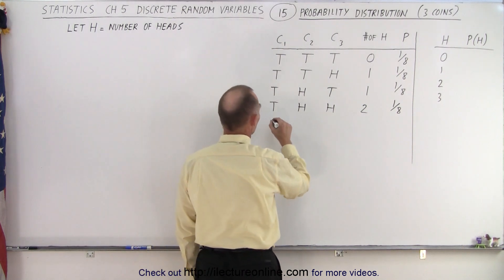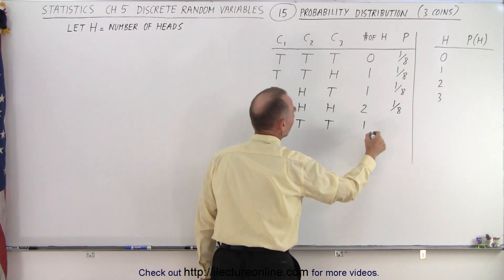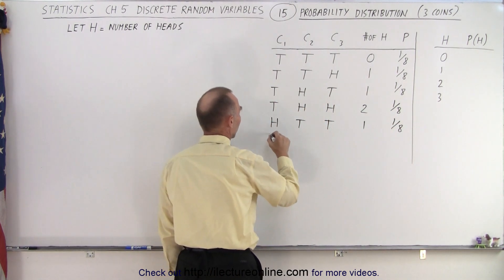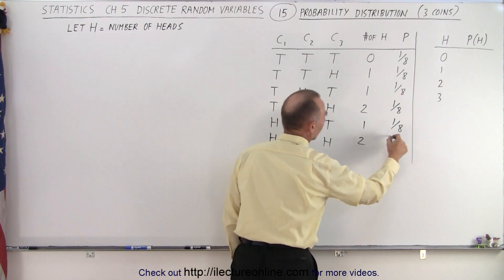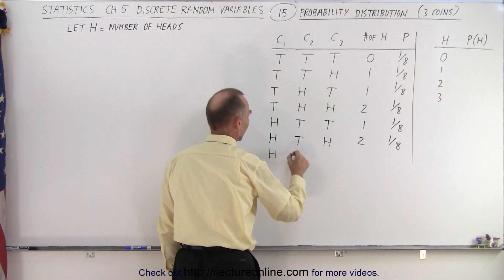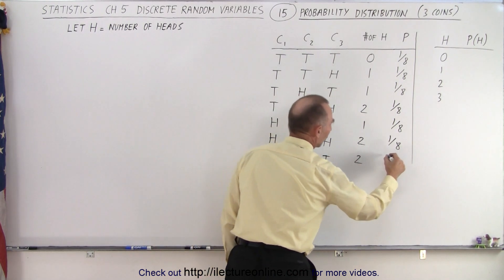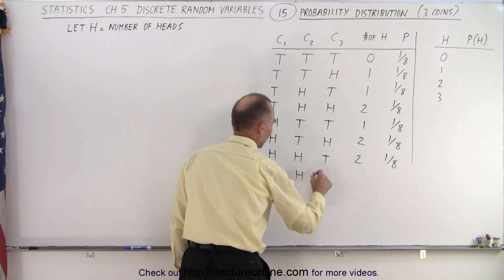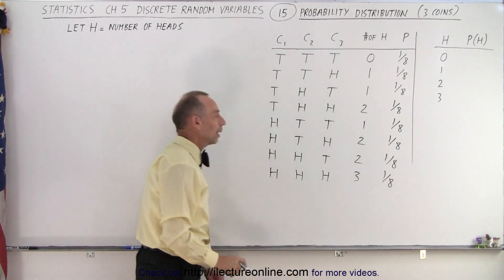Moving on, we have heads, tails, and tails — that's one head with one-eighth probability. Then heads, tails, heads — two heads, again one-eighth probability. Then heads, heads, and tails — two heads, one-eighth probability. And finally, heads, heads, and heads — three heads, one-eighth probability.